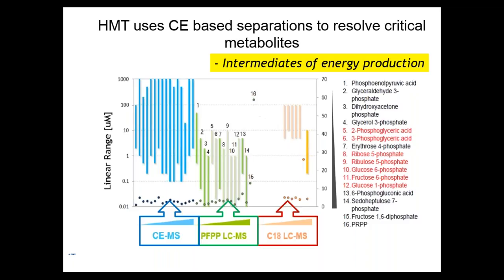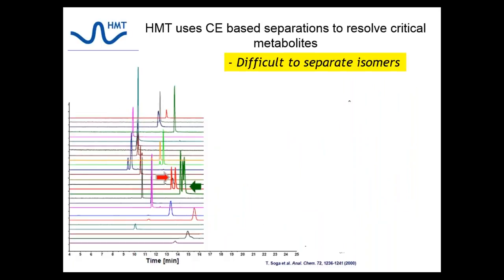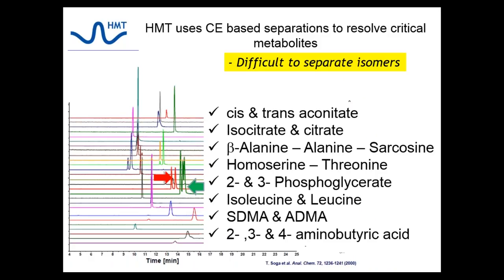The importance of CE to separate, resolve, and quantitate many critical metabolites in amino acid metabolism and energy metabolism cannot be overstated. Many amino acids and organic acids are best resolved with CE-MS for detection and quantitation. Important for the TCA cycle, cis and trans aconitate, isocitrate and citrate can be resolved and quantitated. For isotope analysis using F-SCOPE, these become critical metabolites to observe, along with isoleucine and leucine. With its high resolving power, high mass accuracy, and our large metabolite library, HMT can monitor many critical metabolites using cation and anion detection.